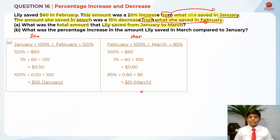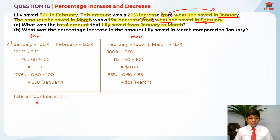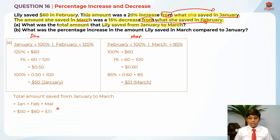For Part A, the total amount from January to March. We need to add January, February, and March. So the total is $50 plus $60 plus $51, which gives us $161 in total.